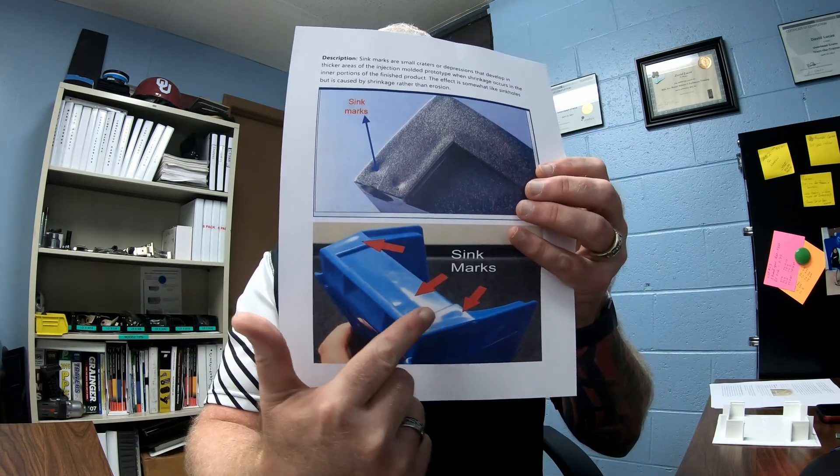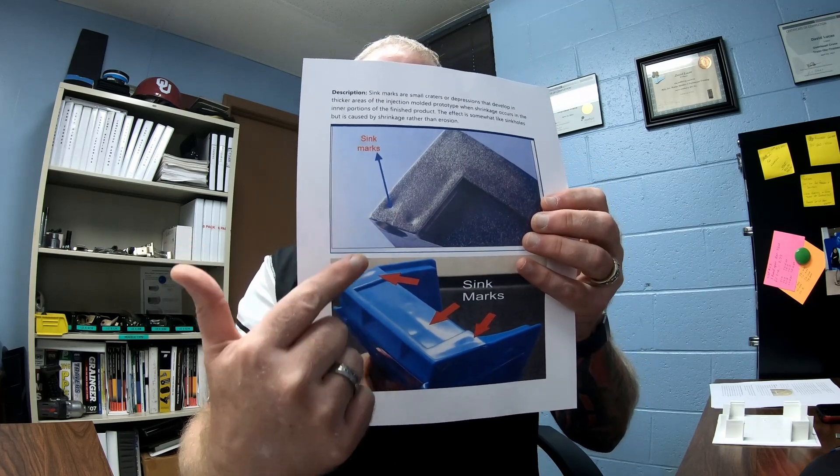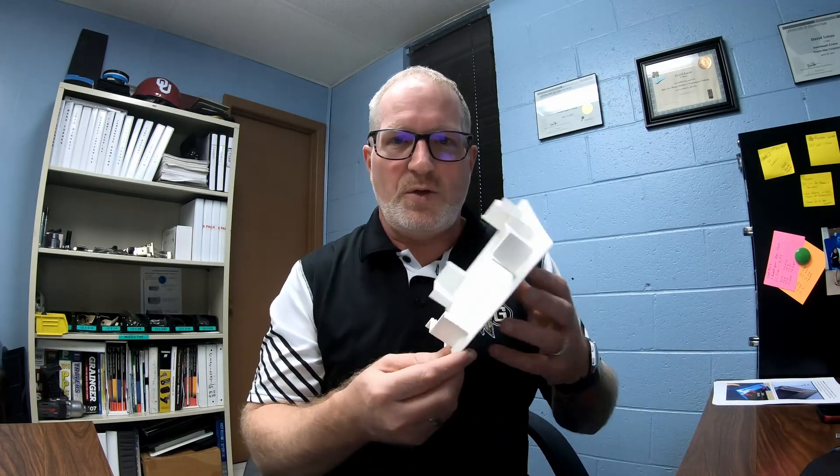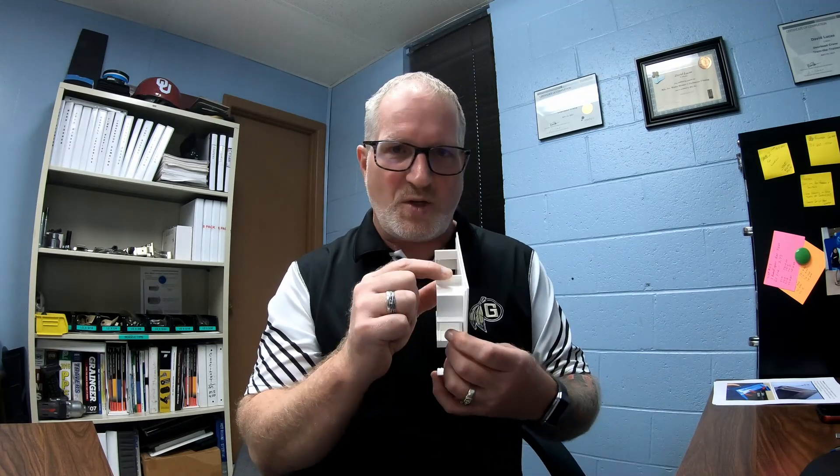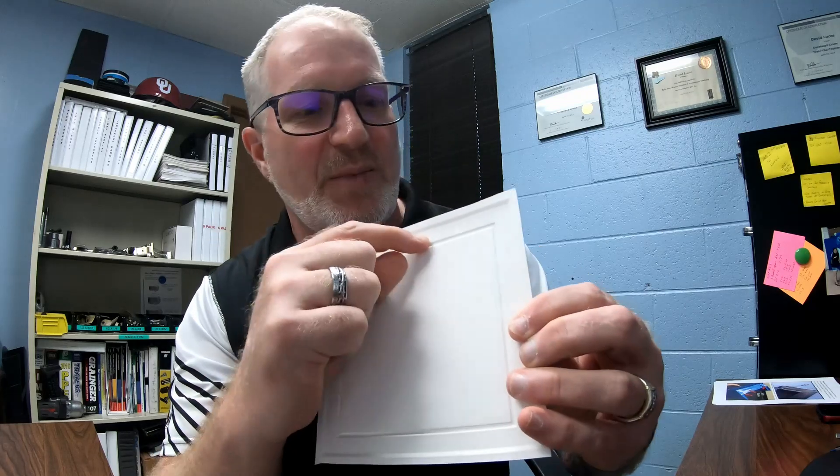I have a part here — I cut this part away to show you — but usually you get sink marks on the back side of where the ribs are. If the wall thickness is thinner than your rib, you're going to get a sink mark on the other side. You can barely see them, but there are sink marks right there.